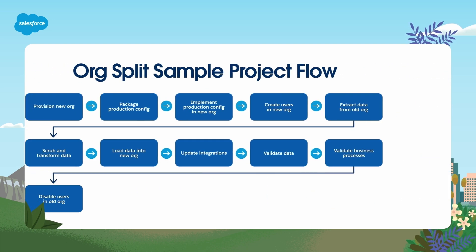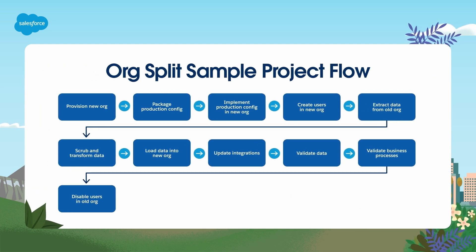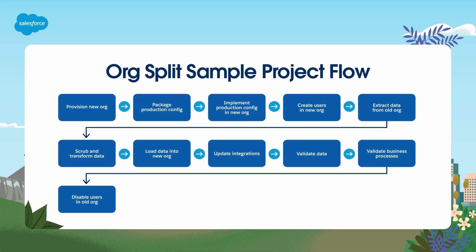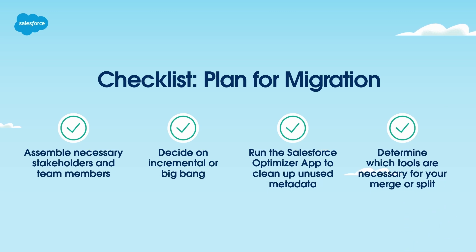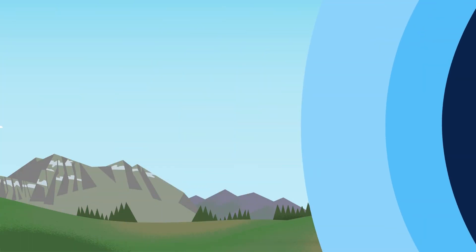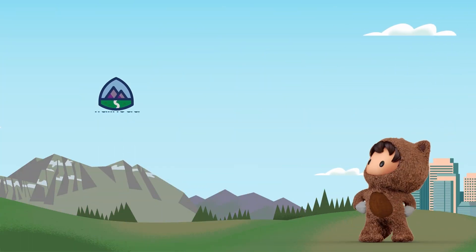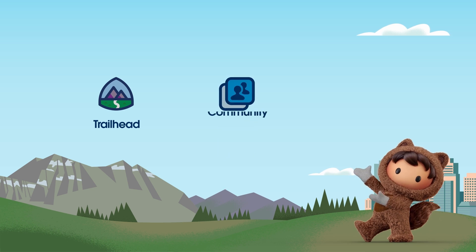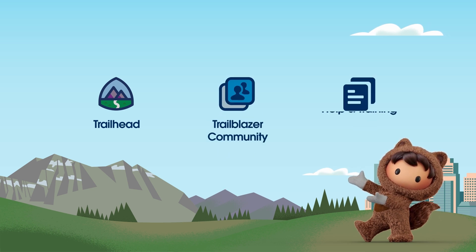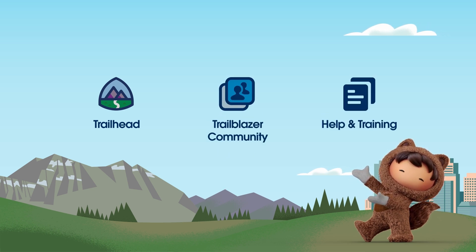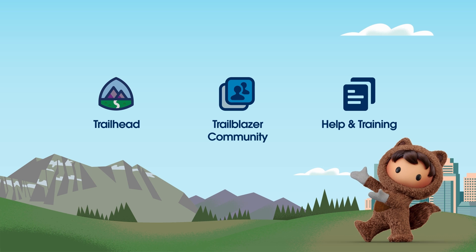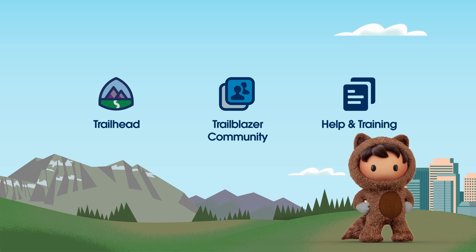Here is another example of a project flow, this time for an org split. Now that you've learned key practices to help you prepare your migration, consult this high-level checklist — once completed, you're ready to get to work. For more information and detailed guides, check out help.salesforce.com or visit trailhead.salesforce.com. Thanks for watching.